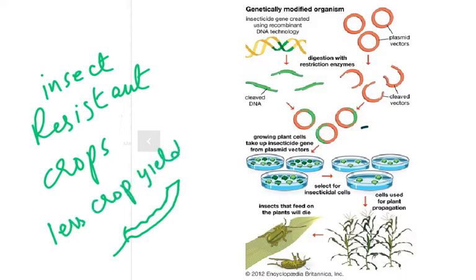If I am a farmer growing wheat, I want more wheat seeds; if I grow sugar cane, I want more of the stem. If insects eat all the leaves, I will have a very low crop yield. So how do we genetically modify the organism to address this?